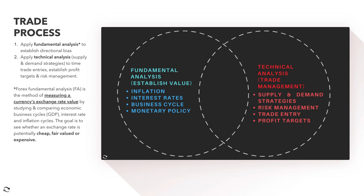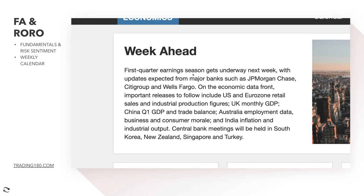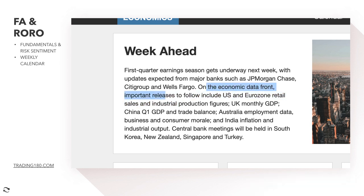Looking at the calendar and the week ahead: first quarter earnings season gets underway, with updates expected from major banks such as JP Morgan Chase, Citigroup, and Wells Fargo. On the economic data front, important releases include US and eurozone retail sales and industrial production figures, UK monthly GDP, and China first quarter GDP.